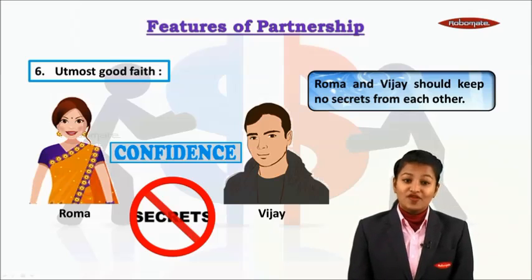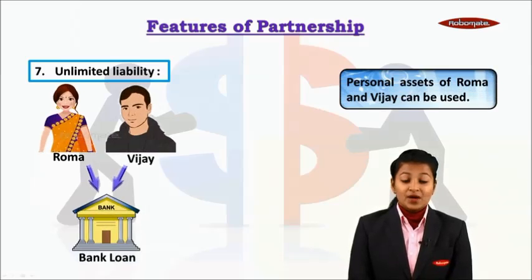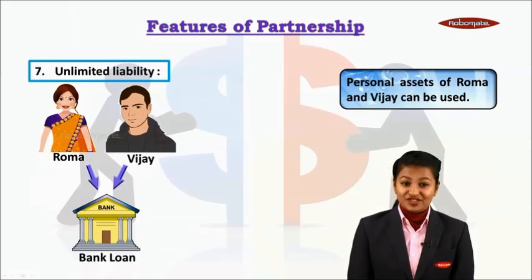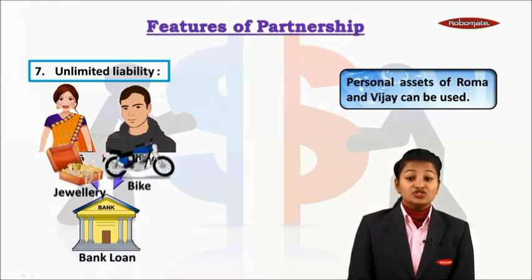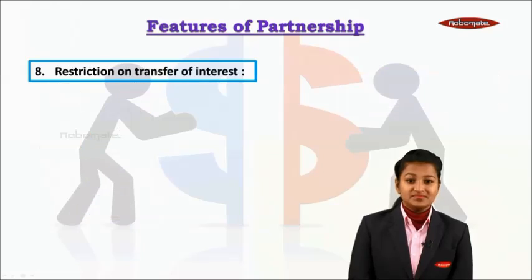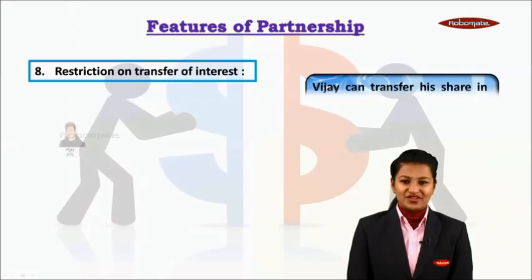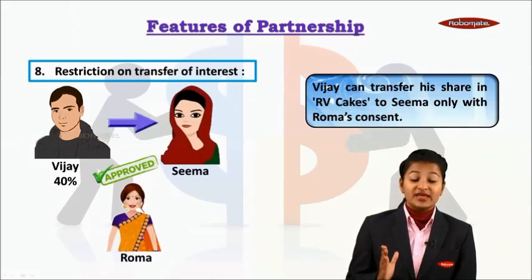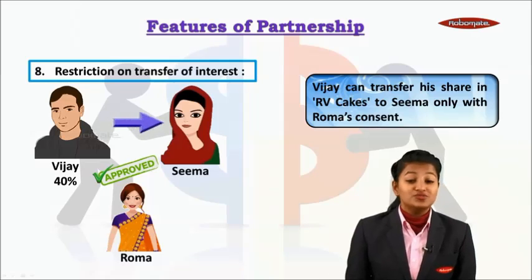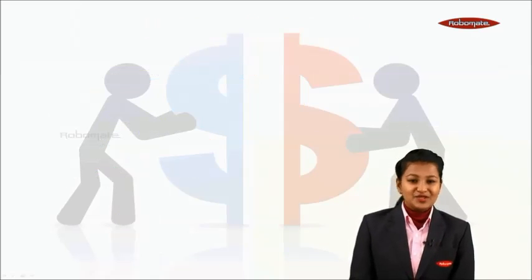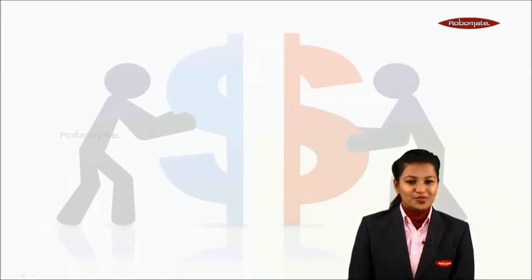The seventh feature of partnership is unlimited liability. Personal assets of Roma and Vijay — such as Roma's jewelry and Vijay's bike — can be used to repay loans taken from banks. The eighth and final feature is restriction on transfer of interest. Vijay can transfer his share in RV Cakes to Seema only if it is approved by Roma, meaning it requires Roma's consent. In the next module, we will be learning to distinguish between partnership and sole proprietorship firms.